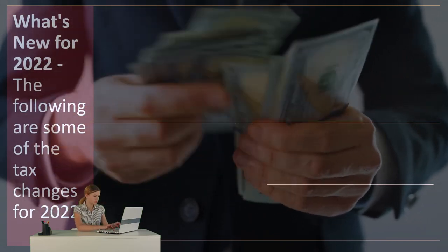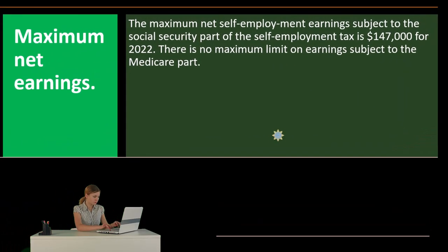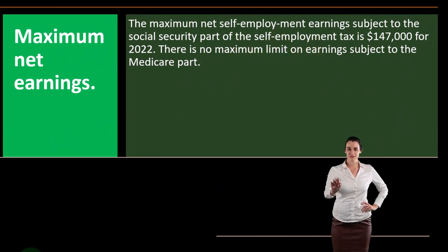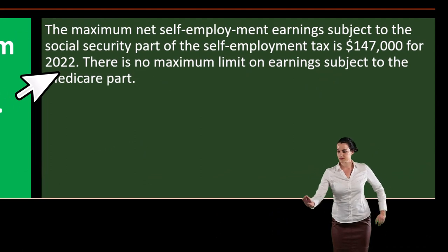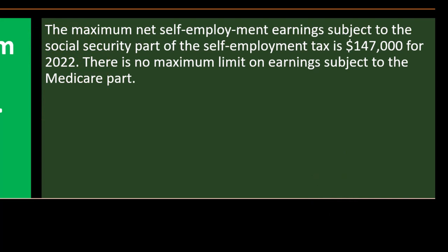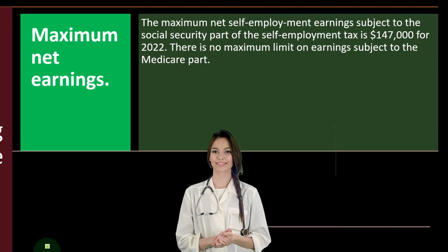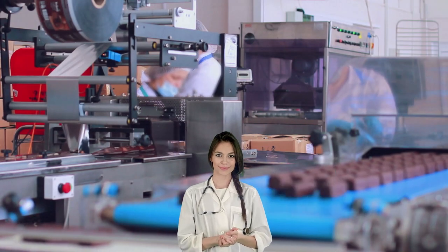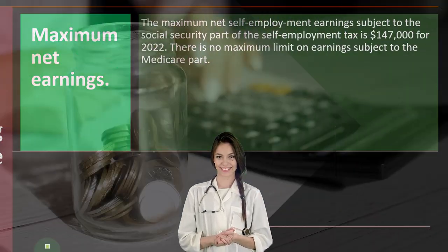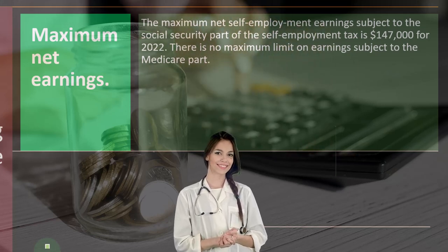So what's new for 2022? The following are some of the tax changes for 2022. The maximum net self-employment earnings subject to the Social Security part of self-employment tax is $147,000 for 2022. There is no maximum limit on earnings subject to the Medicare part. When we're thinking about our self-employed business, we have to deal with the federal income taxes, but we also have to deal with the equivalent of the payroll taxes — as a W-2 employee, that being Social Security and Medicare — the self-employment taxes.